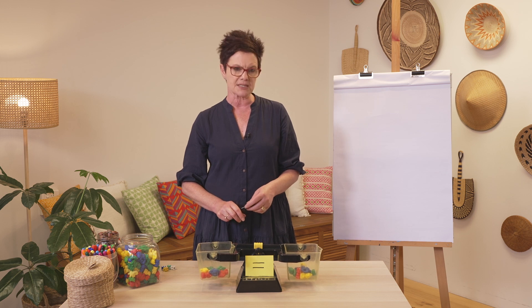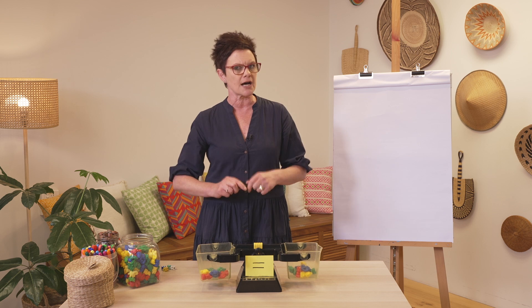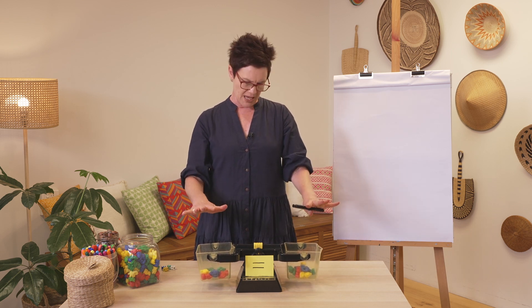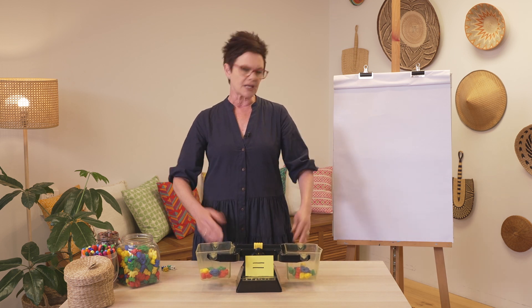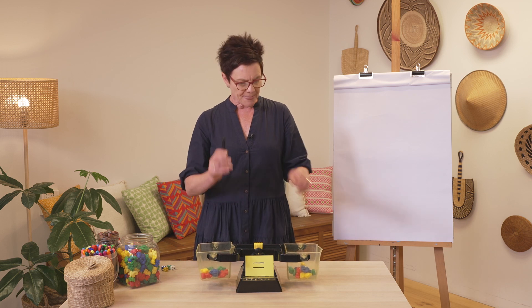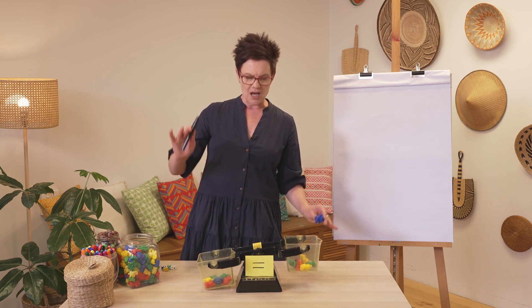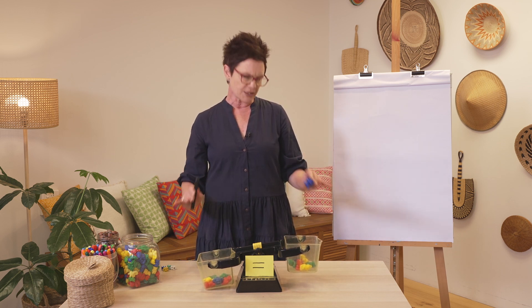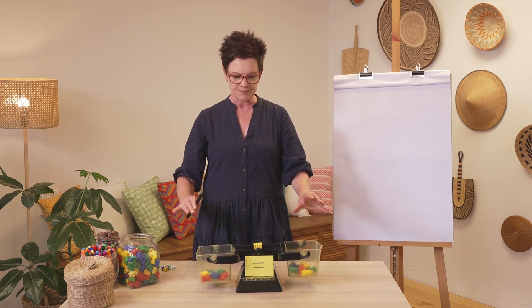We'll know we've got this right when we can balance our number sentences correctly. I've started the lesson by placing seven bears on each side, and you can see they're quite beautifully balanced. If I take a bear out, we have an unbalanced number sentence. I'd like to show you how we can write some number sentences with our equal sign in the middle.